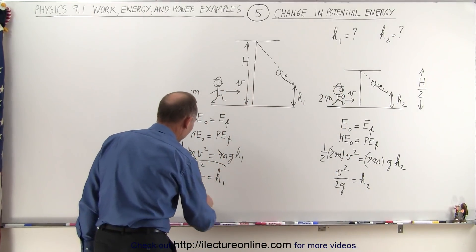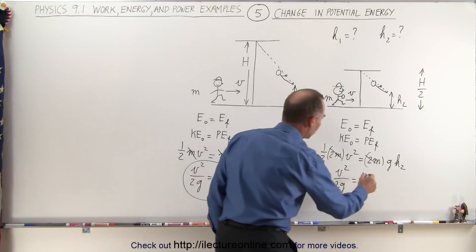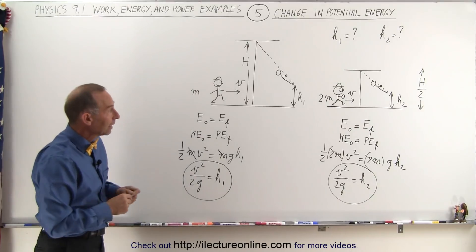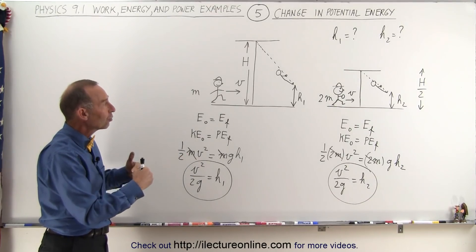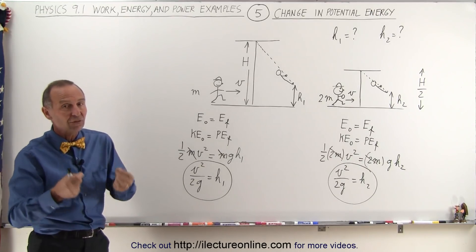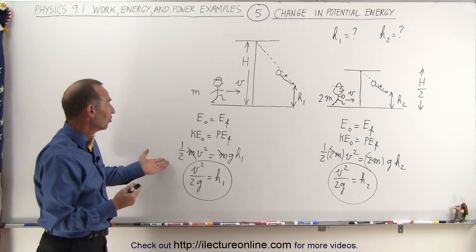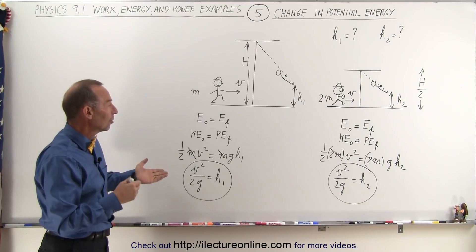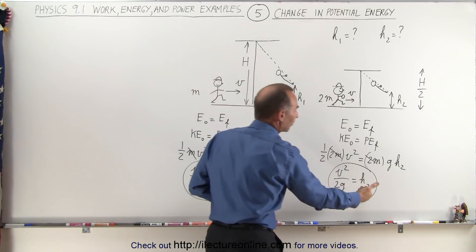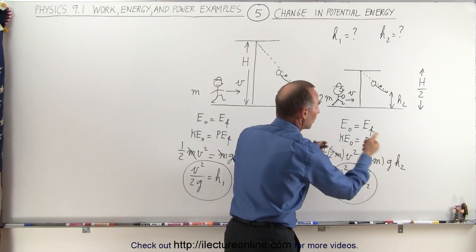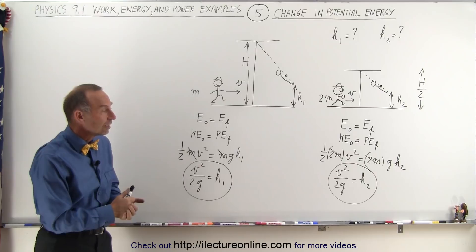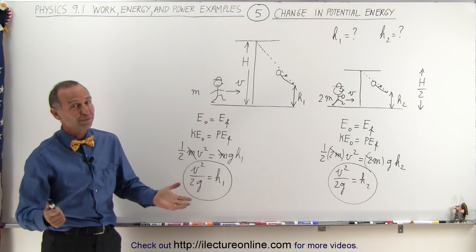So notice that h1 is v squared over 2g, h2 is v squared over 2g so it doesn't matter if the runner has more mass or less mass or if the rope is suspended from a higher ceiling or lower ceiling. The height in each case must be the same because the initial kinetic energy is relatively the same. Twice the mass, twice the kinetic energy, but since it's twice the mass it'd be twice the potential energy, the 2m's cancel out, the 1m cancel out, the mass is not significant, and therefore you can see that the height is the same in both cases. And that's how it's done.